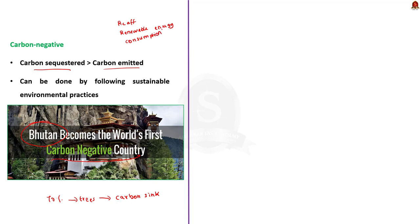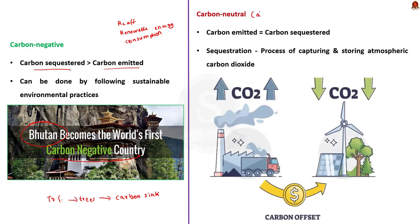Now let us see the other options. The remaining three options define other important environmental concepts. Option A talks about carbon neutral. A city is carbon neutral if the carbon emissions let out by the city equal the carbon sequestrated by the city. Here, sequestration means the process of capturing and storing atmospheric carbon dioxide.